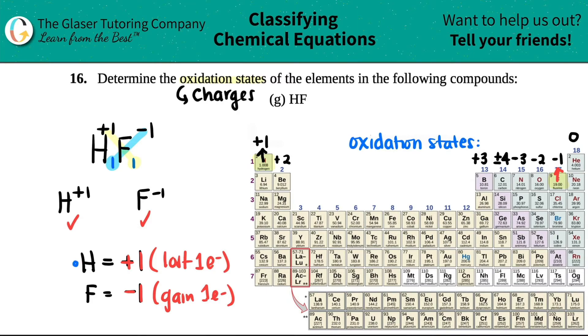If hydrogen lost one electron and fluorine gained it, the electron that fluorine gained had to come from the one that hydrogen lost. It's all about exchanging electrons.